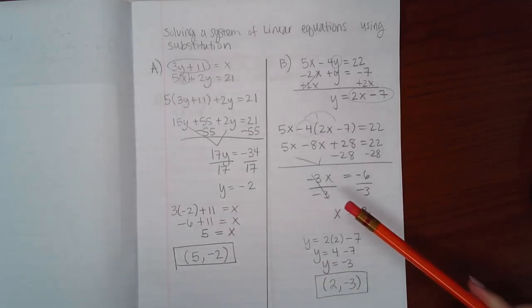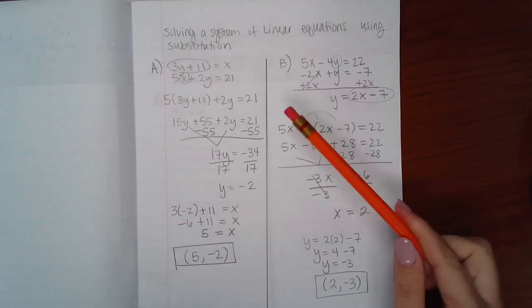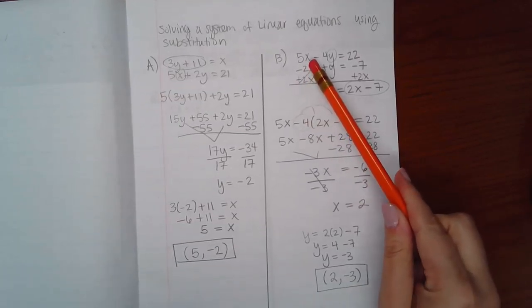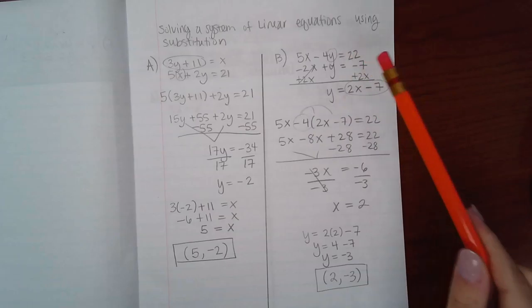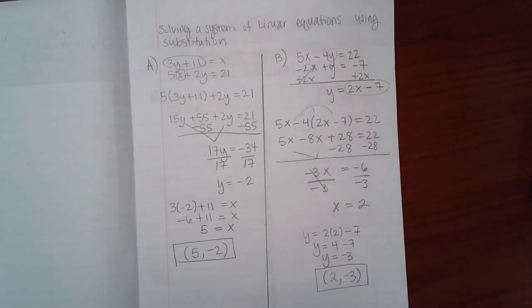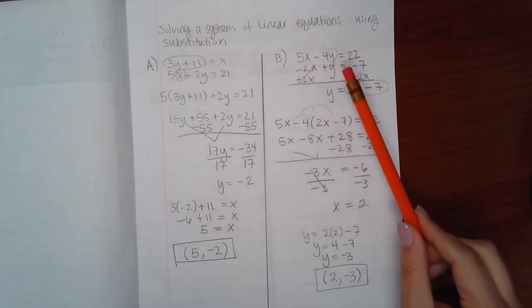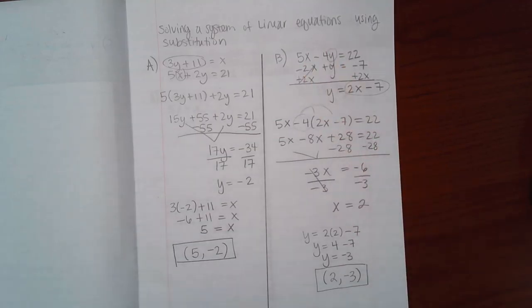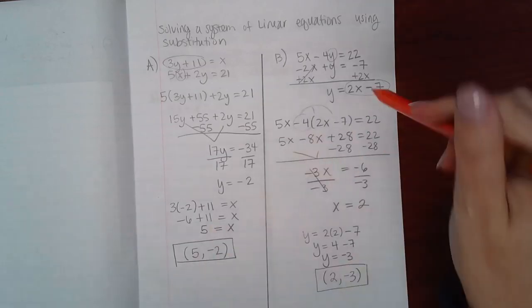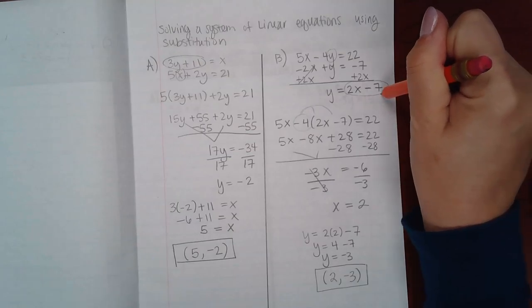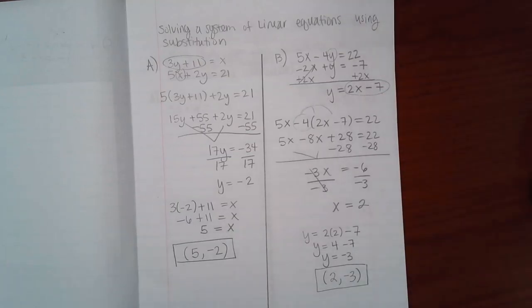Now if I would have taken this 2 and plugged it in here, and then solved for y, I would have still got y equal to negative 3. If I would have plugged that 2 into here, and solved for this y, I still would have ended up with y equal to negative 3. So it makes no difference on which equation, the top, the bottom, or the manipulated one. Any of those, you're able to plug in your first solution.